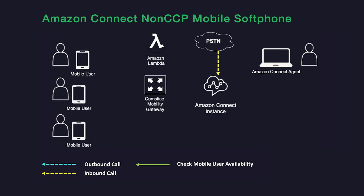When a call comes in to Amazon Connect from the PSTN for the mobile user, the Amazon Connect contact flow checks the mobile user's availability using a Lambda function provided by ComSys. Amazon Connect then transfers the call to the mobility queue with the selected agent's details. The Mobility Gateway extends the call to the mobile softphone and rings the mobile device.